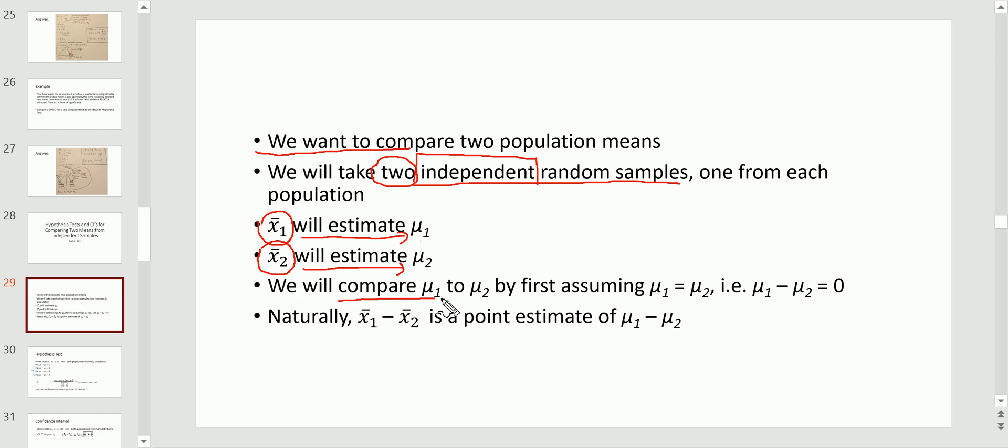And then ultimately, we want to compare mu one to mu two. And the way we're going to start is we're going to start by assuming that mu one equals mu two. It's a nice position to start and see whether the data shows us otherwise. Another way to write this is just mu one minus mu two equals zero. That's just saying there's no difference. So naturally, the position to start is to take the two x bars that we computed from the independent samples and get the difference. This is going to serve as our point estimate of what we really would like to know, which is the difference of these two. And that's basic, those are the basic conceptual ideas.